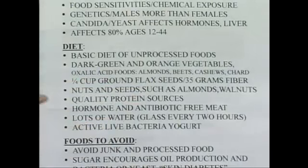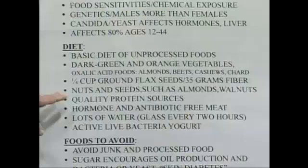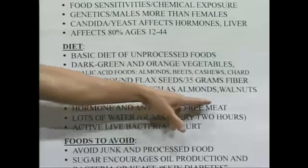A quarter cup of ground flax seeds or at least 35 grams of fruit or vegetable fiber. If you don't have adequate amounts of fiber in the diet, you can't detox. You can't rid the bowel of toxins, and the longer your toxins stay in the bowel, the more they get reabsorbed back into the body and make you toxic all over again. Nuts and seeds like almonds and walnuts — good fats in the diet including almonds, walnuts, pecans, sunflower seeds, pumpkin seeds, and avocados — they reduce inflammation and can help stabilize those hormones to help reduce acne symptoms.